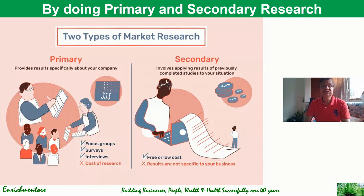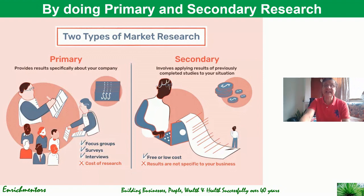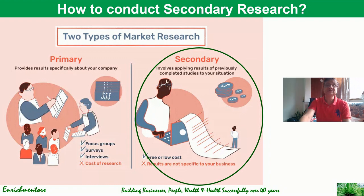Primary research provides results specifically about your company. The way you do it is through focus groups, surveys, and interviews. The cost is high because primary research is specifically tailored for your company and requires significant data collection time and money. Secondary research involves applying the results of previously completed studies to your situation. Such research is either free on the internet or very low cost, but results are not specific to your business — you have to be careful interpreting them and examine how much is valid for you.